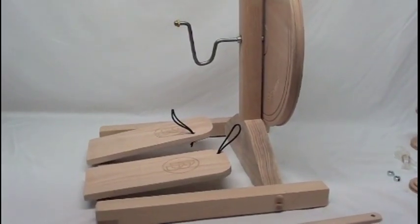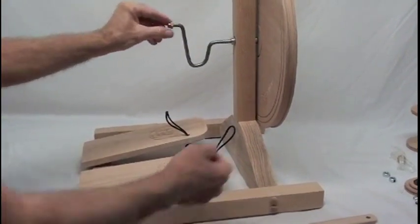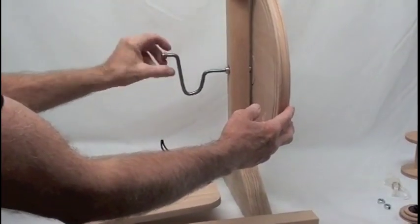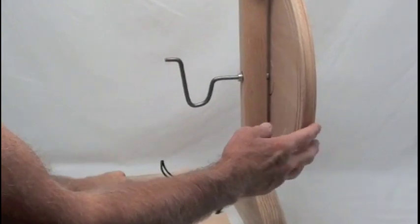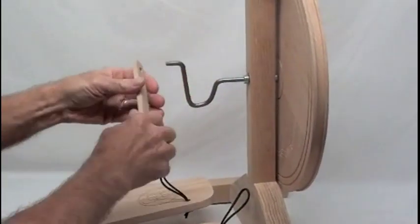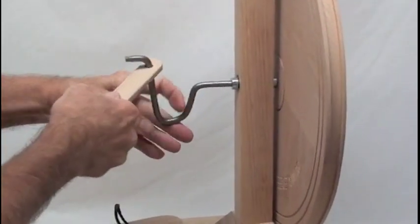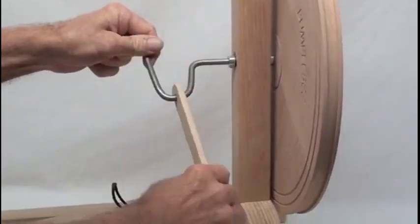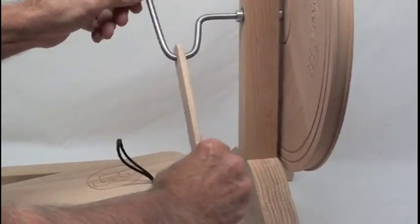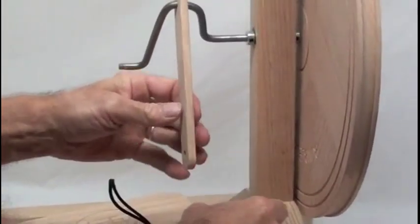To attach the footman to the axle, remove this brass screw. Take one of the footman, fit it over the end of the axle, rotate it around past that corner and then around that corner, then bring it up here so you've got some room to work.